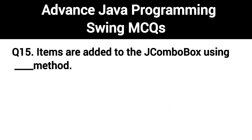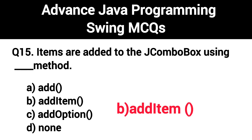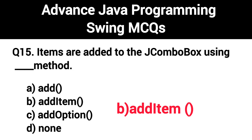Q15. Items are added to the JComboBox using which method? The right answer is Option B: addItem method.